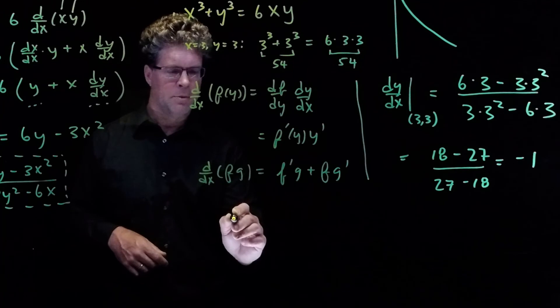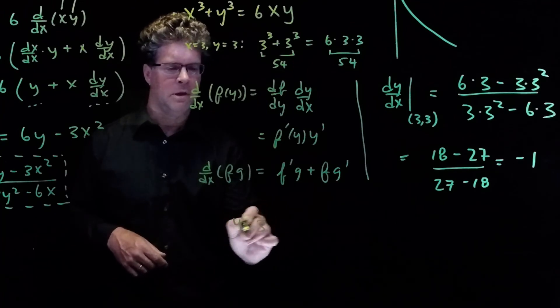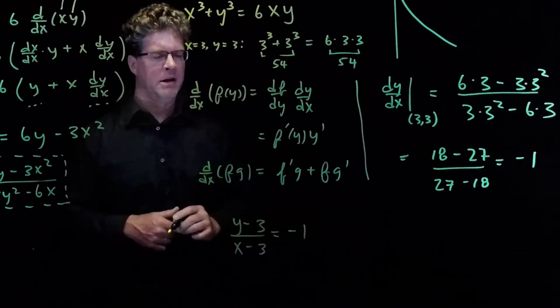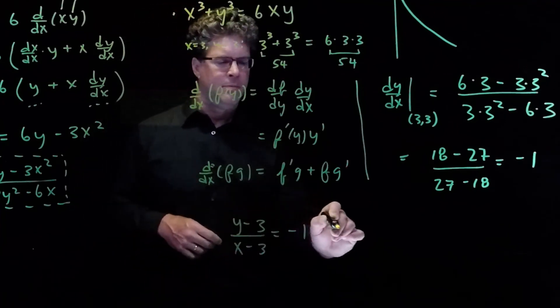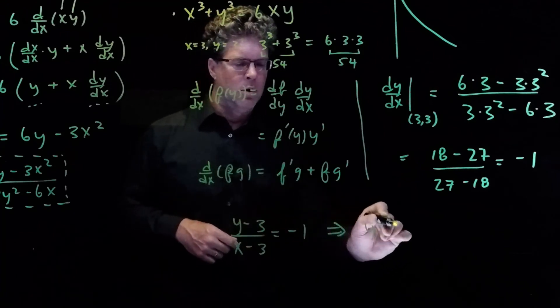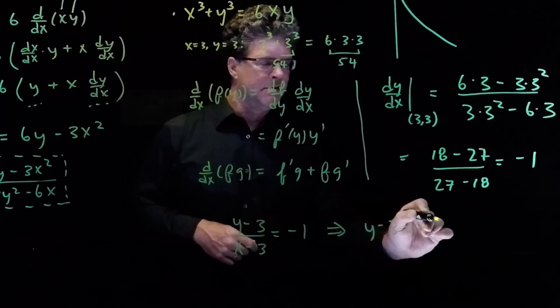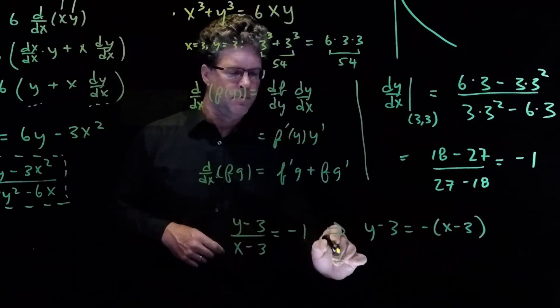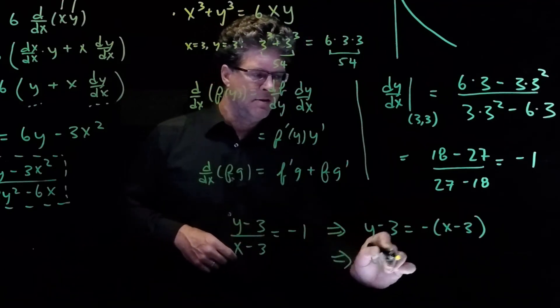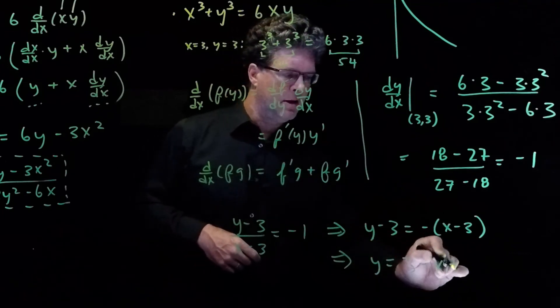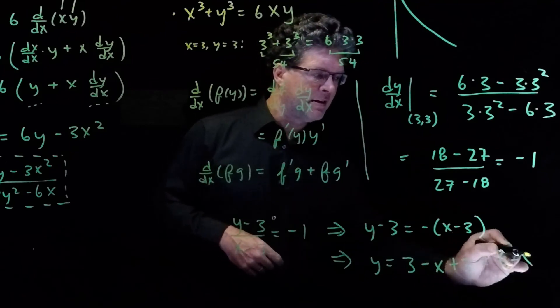And so we're going to write y minus 3 over x minus 3 is equal to the slope, which is minus 1. And so we can write this as y minus 3 is equal to minus x plus 3. Or y is equal to 3 minus x plus 3 is equal to 6 minus x.